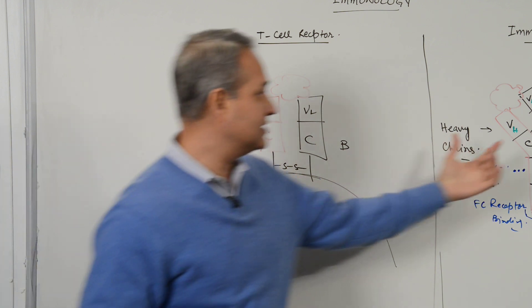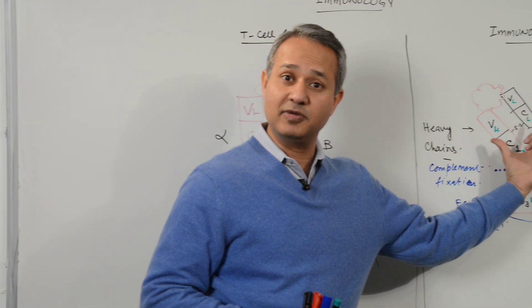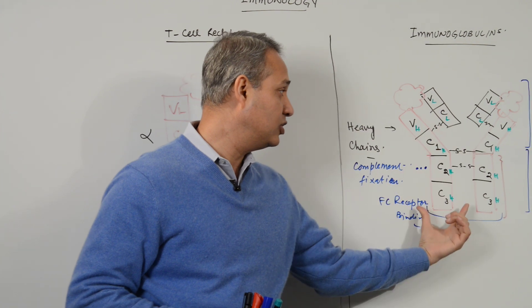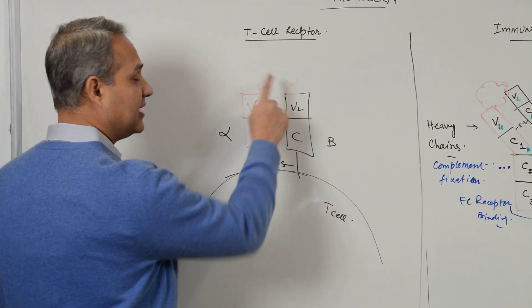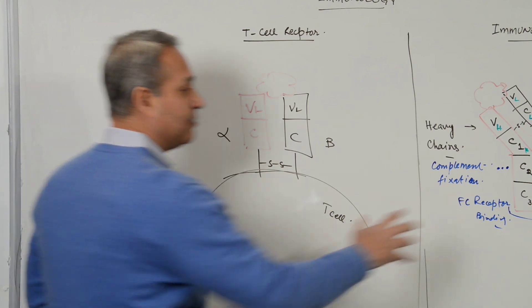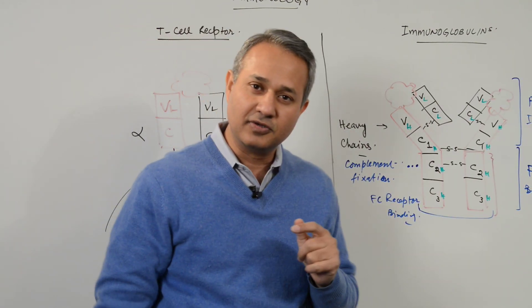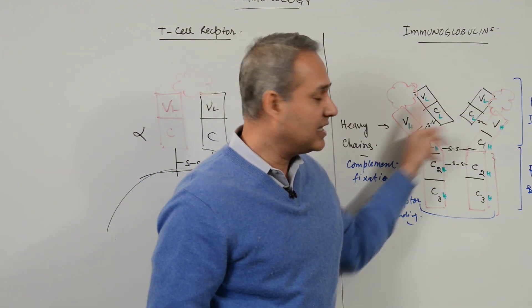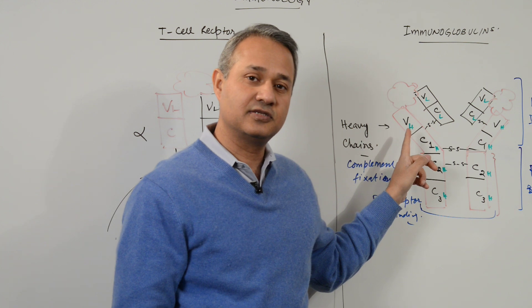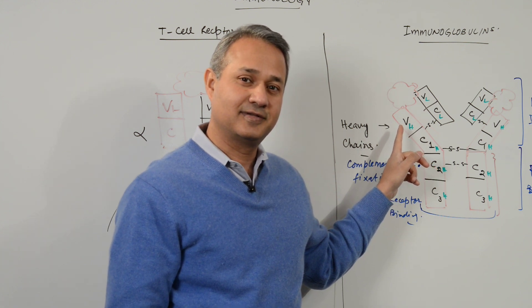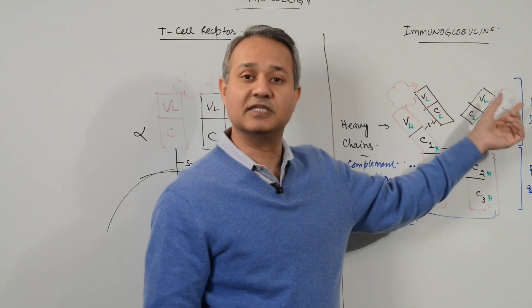We were talking about the T cell receptor and the resemblance to the light chain and the variable region of the immunoglobulin. The T cell receptor has one antigen binding site, while the immunoglobulin has two antigen binding sites. Now, if I asked you whether these two antigen binding sites bind to different structural antigens — no, the antigen is going to be of the same type.